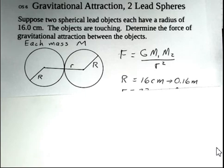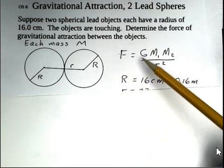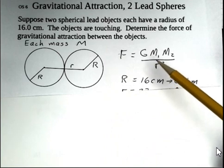We're given that each object has a radius of 16 centimeters, and the objects are touching, and the objects are lead. So we're headed towards calculating this force, the F. G is a constant. That's known. We'll look that up.